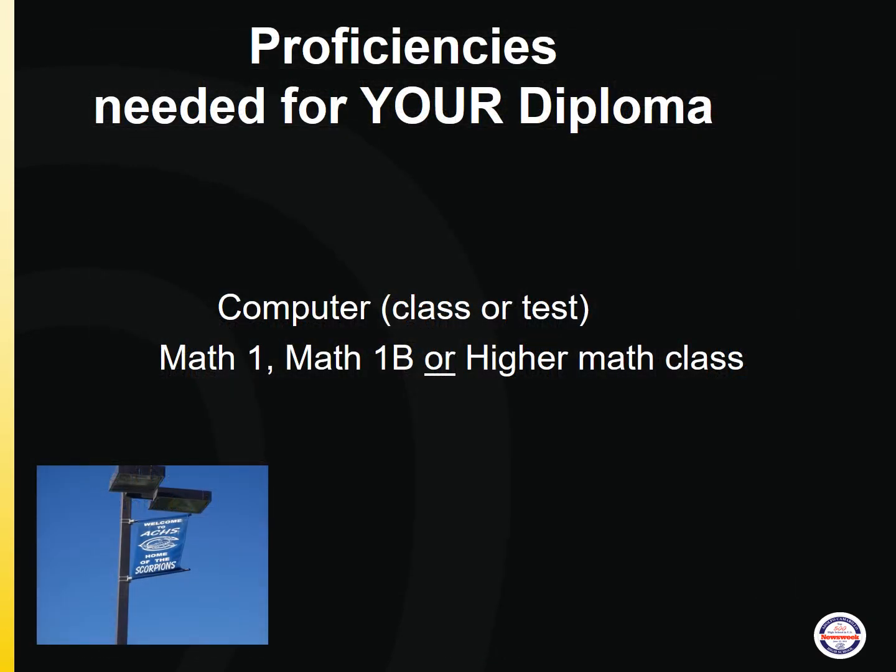In addition to the 230 credits required for the diploma, there are also two proficiencies. The first is computer literacy, for which you can pass a test or take a class. The second is the algebra requirement — for that you need to pass Math 1, Math 1B, or a higher math class.